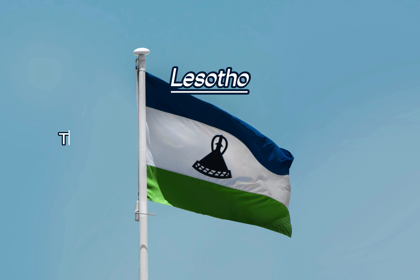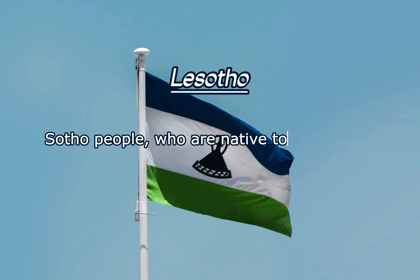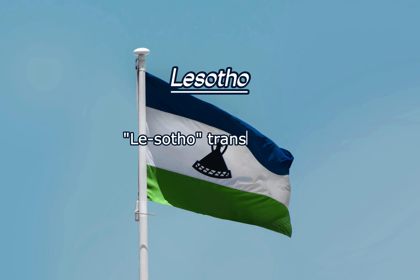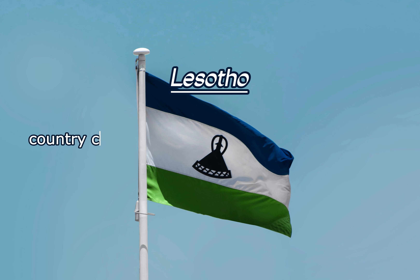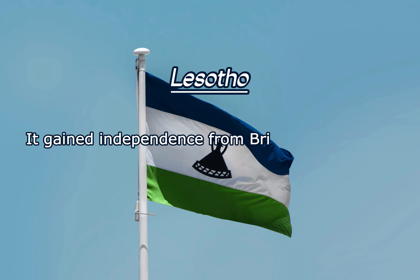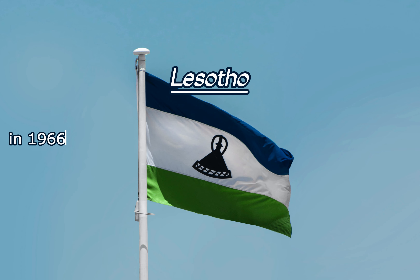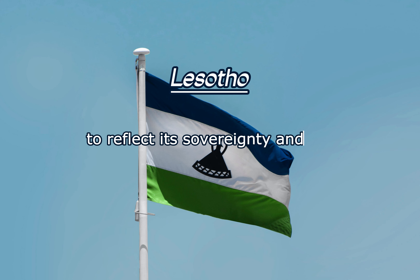Lesotho: The name Lesotho is derived from the Sotho people who are native to the region. Lesotho translates to the land of the Sotho people in the Sotho language. It is a landlocked country completely surrounded by South Africa. It gained independence from British colonial rule in 1966 and adopted the name Kingdom of Lesotho to reflect its sovereignty and the cultural identity of its people.